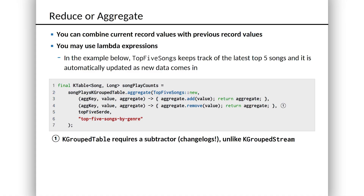What if we wanted to take it up a notch and maintain a list of the top five by play count? Well, that is fundamentally an aggregation operation. Counting is an aggregation operation, but counting is one that's baked into the API. Your top five songs is a custom aggregation, and for that we use the aggregate method. So let's imagine we started with a KGroupedTable — a lot like the one we just made. Here on line two, we've got a thing called songPlaysKGroupedTable. KGroupedTable has a method called aggregate, and aggregate takes a few parameters. I want to walk through them one at a time so you get an idea of how much power is available when you need to do fairly custom things.